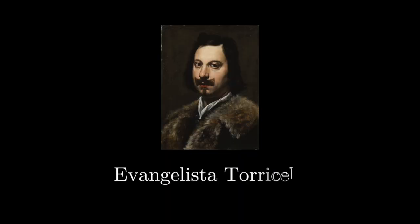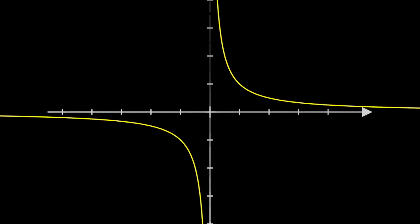During the 17th century, before the invention of calculus, Evangelista Torricelli found this apparent paradox with the nature of infinity. Let's consider the function f(x) = 1/x.